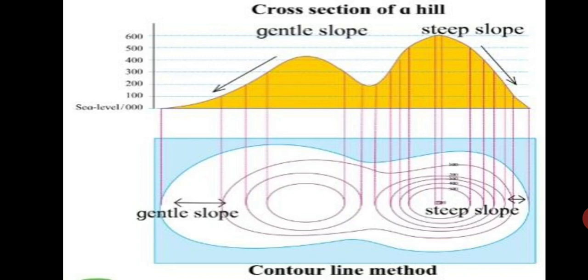This method is used to show the unevenness of landforms on a map. The height of the land is measured from sea level. Next, points of the same height are identified. Their position is marked accurately on the map. These locations are joined with a line. Such lines are called contour lines.